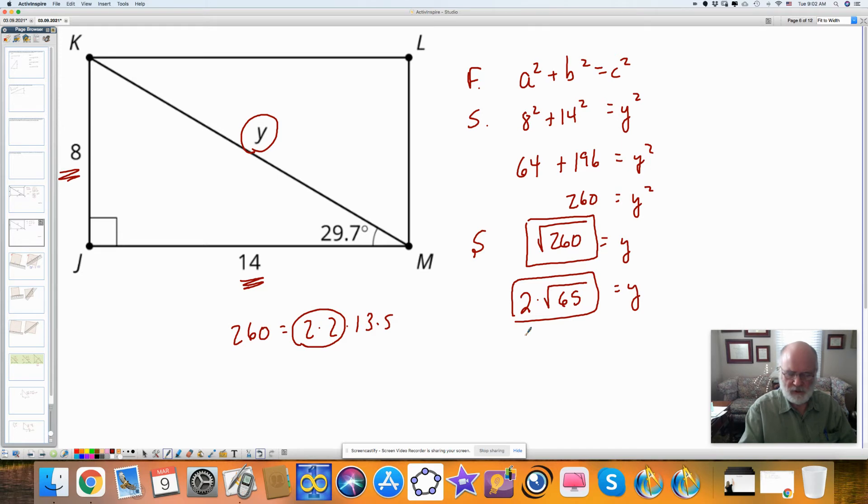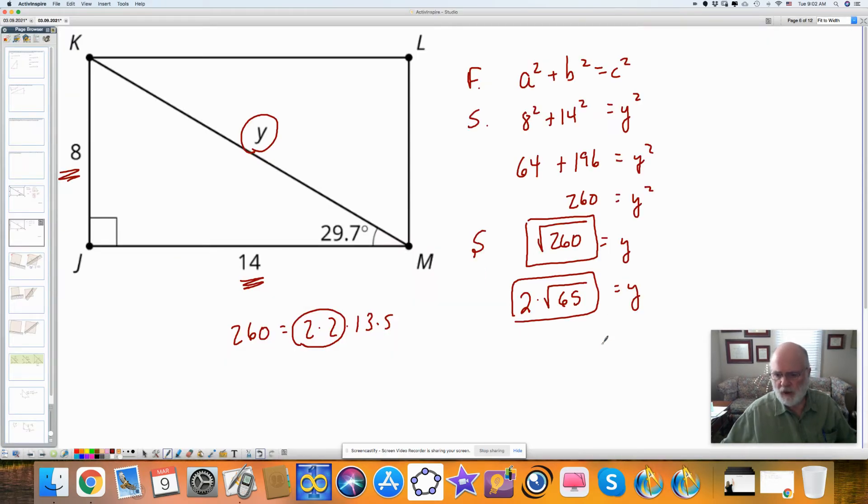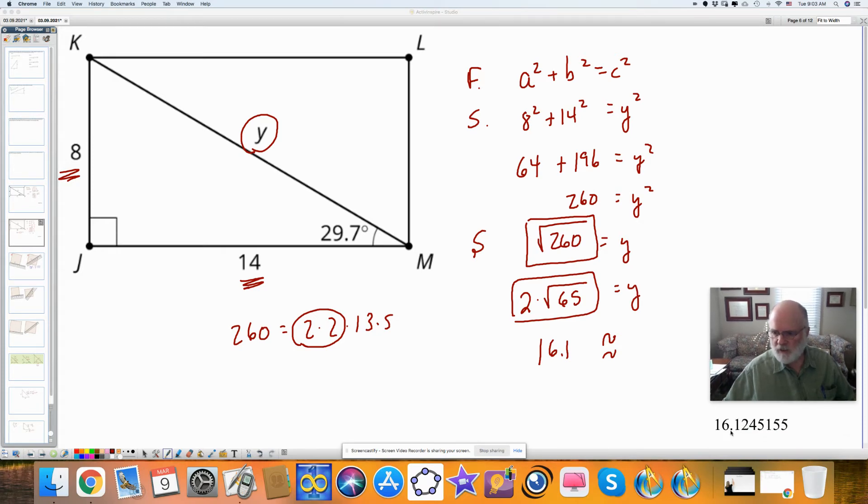Let's just look it up, 260. So the square root of 260 is about 16.1, so it's approximately 16.1. I think if you did the exact answer, it's 16.124, now this is not exact, this is still approximation.